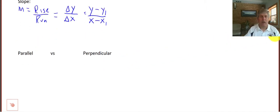And then parallel lines versus perpendicular lines. Parallel lines, the slope of one line is equal to the slope of the other as long as we have differing y-intercepts. And then perpendicular lines, we have opposite reciprocal slopes.